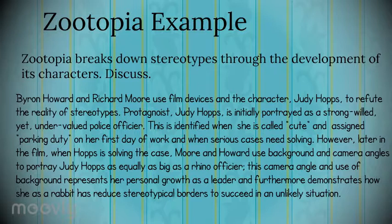We can see that in this body paragraph, I started with the two quotations — calling her cute and parking duty — and then moved on to explaining how this scene, the film techniques and the background, were evidence of Hopp's growth as a character and as a person. It links in really nicely with my argument and it also talks about Howard and Moore's authorial purpose.